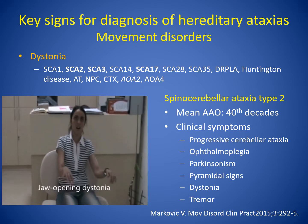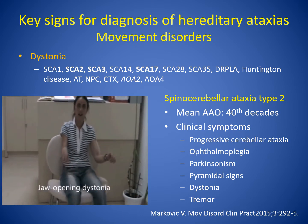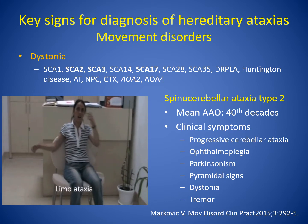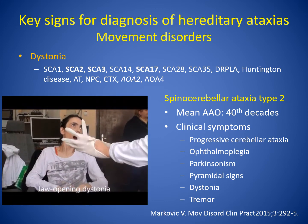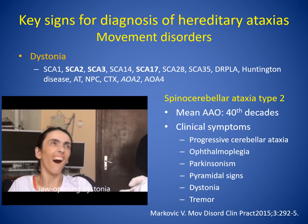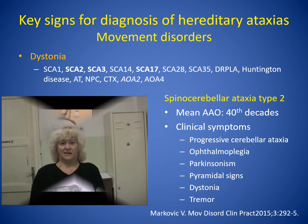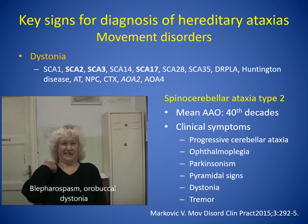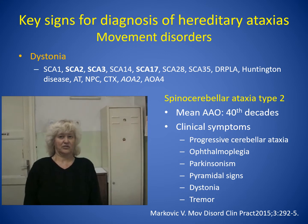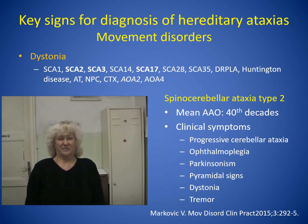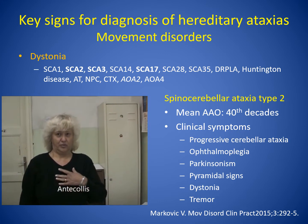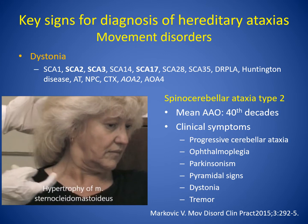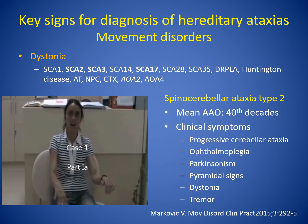Case 1 shows mild jaw-opening dystonia in addition to limb ataxia and tremor. Six years after the examination, she shows more severe jaw-opening dystonia. Case 2 shows orofacial spasm or buccal dystonia and cervical dystonia in addition to limb and gait ataxia. In patients with cerebellar ataxia accompanied by lower cranial dystonia, SCA 2 should be considered during the diagnostic work-up.